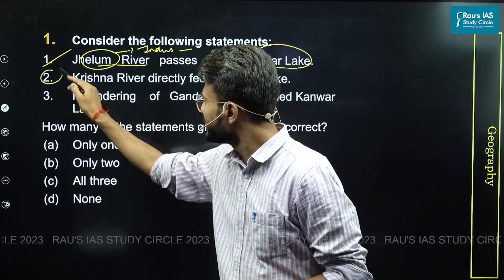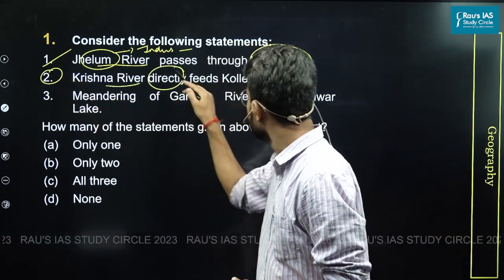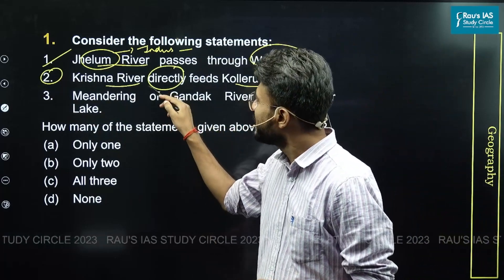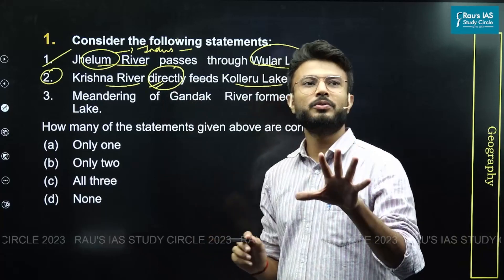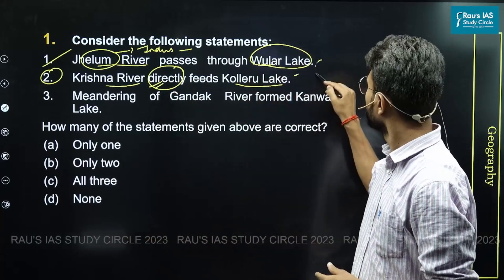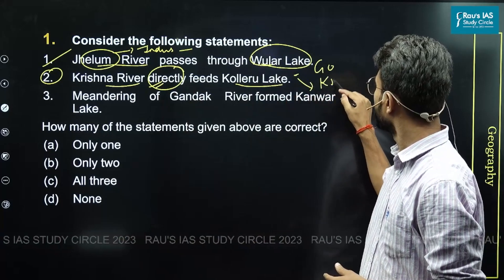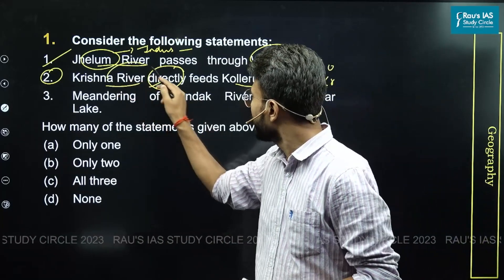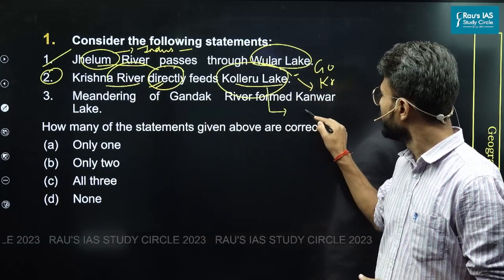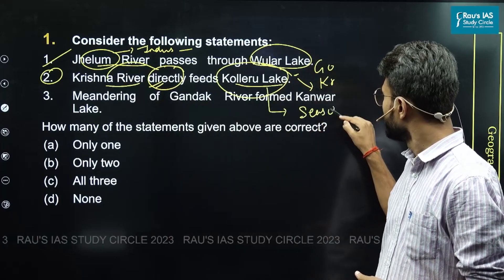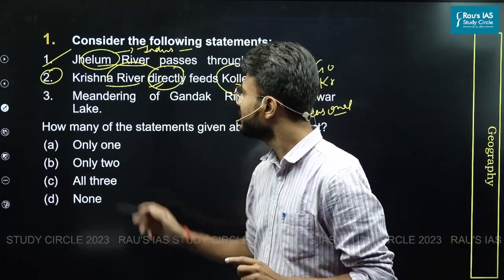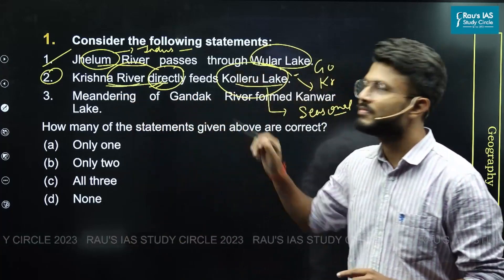Statement two says that the Krishna river directly feeds the Kolleru lake. Here was the catch — UPSC has explicitly mentioned the word 'directly.' We all know that Kolleru lake basically lies between two important river systems, that is Godavari as well as Krishna. However, Krishna does not directly feed it. Rather, the Kolleru lake is directly fed by two seasonal streams. The fact is that Krishna does not directly feed it.